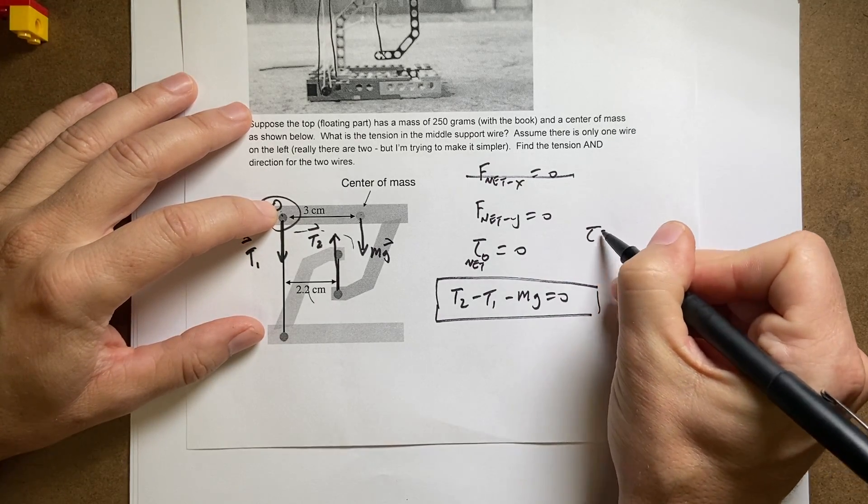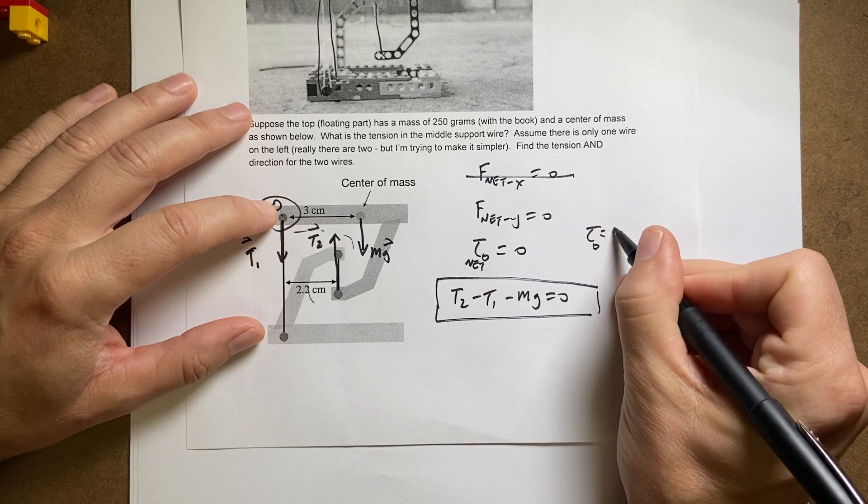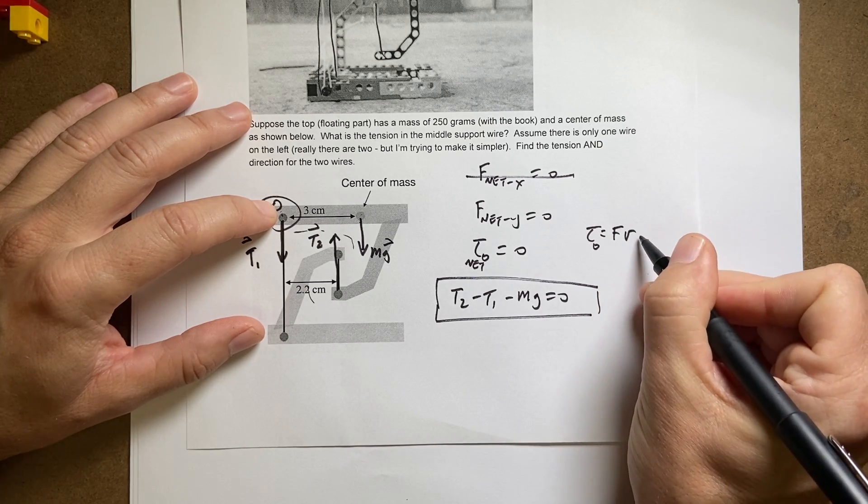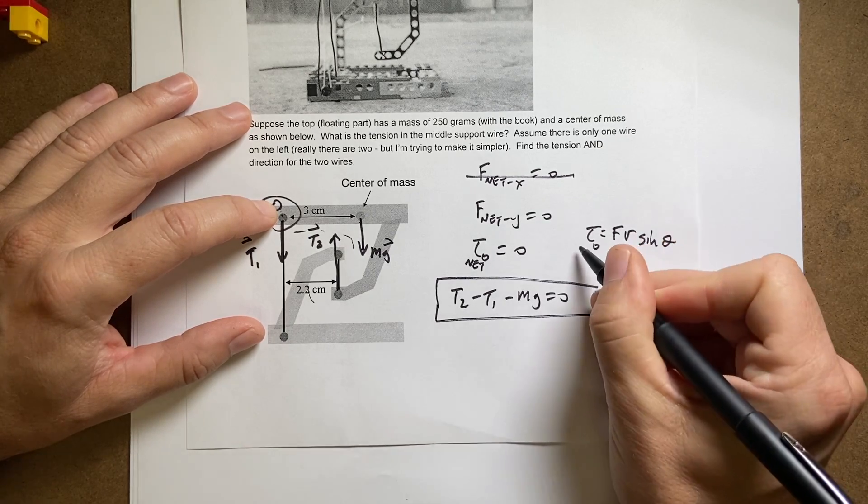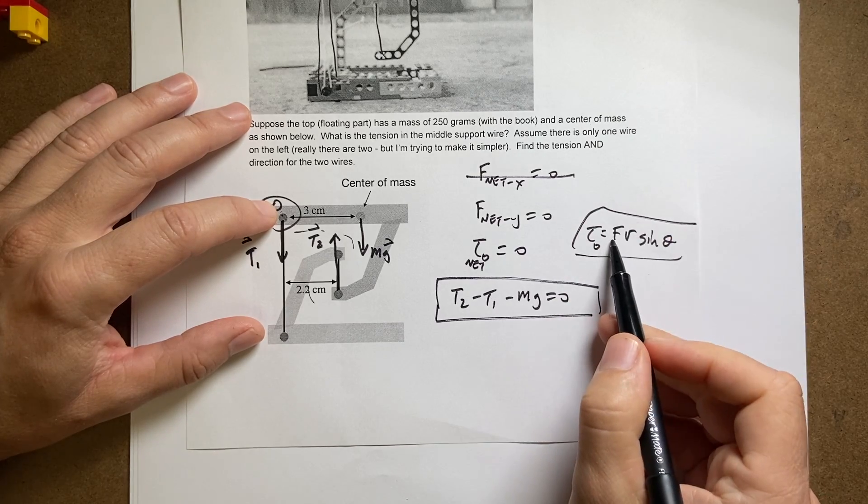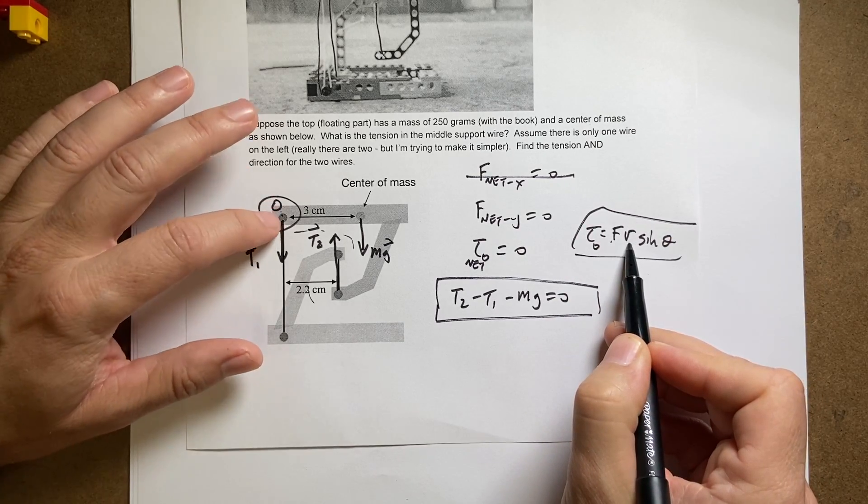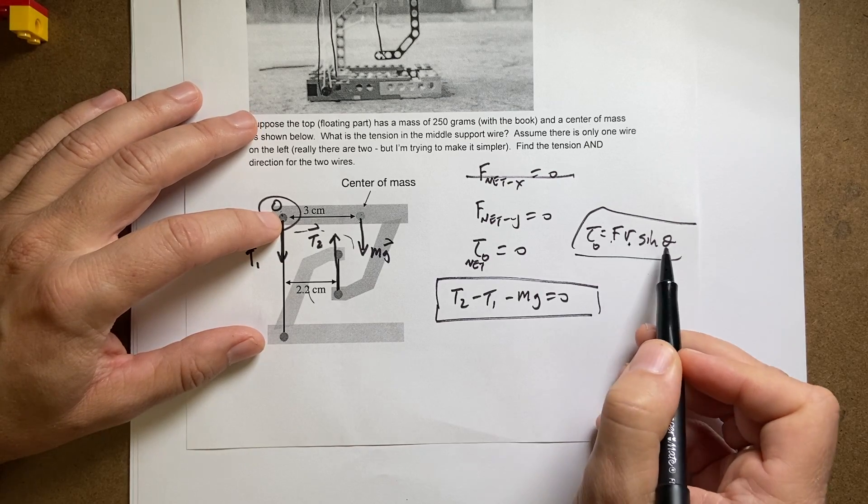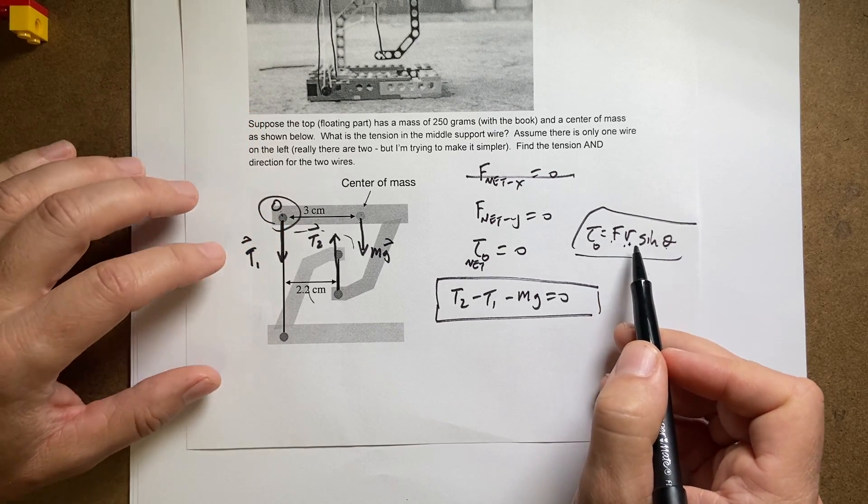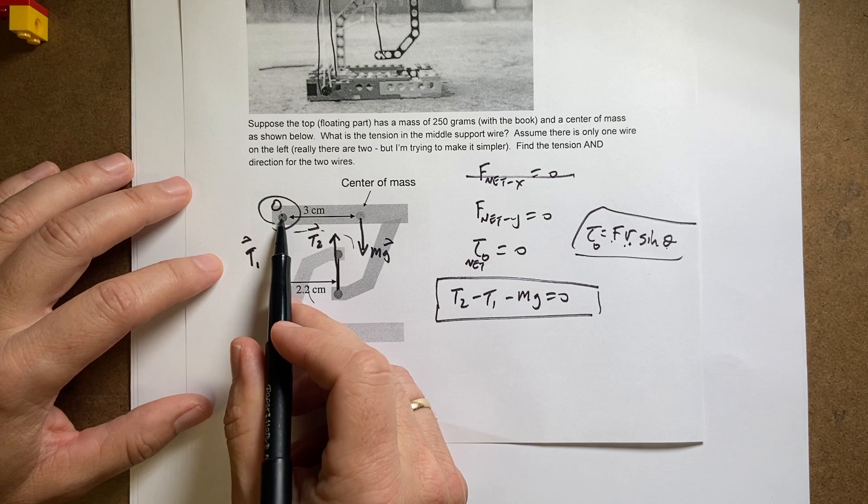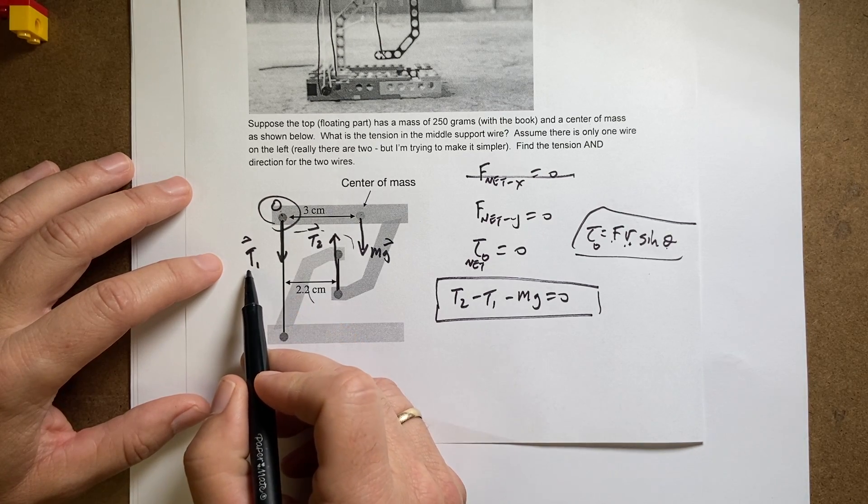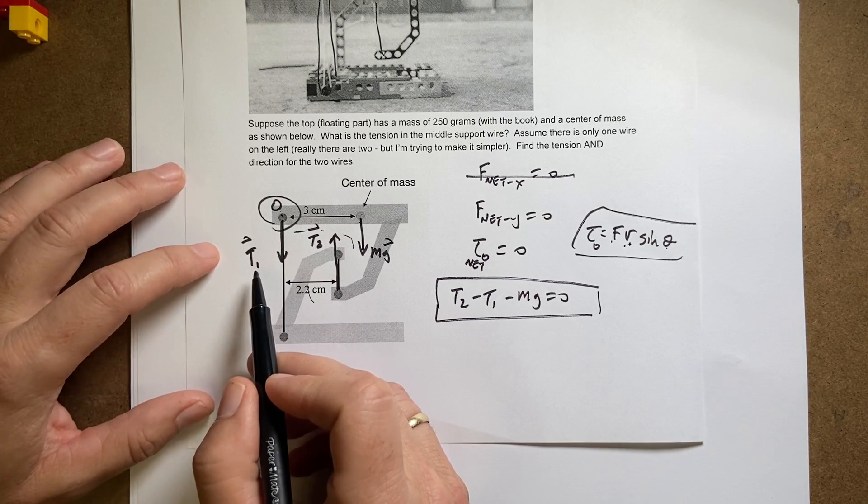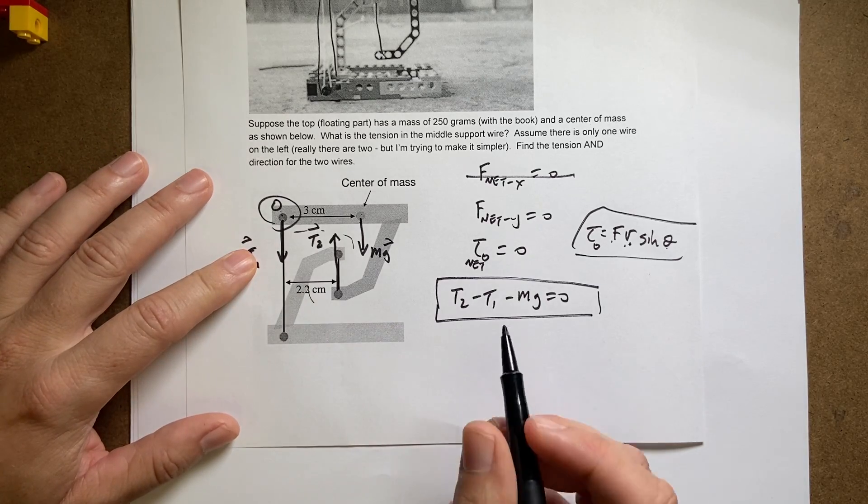If I pick this, remember that torque about some point O is F R sine of theta. So F is the force, R is the distance from the point to where the force is applied, and theta is the angle between R and F. So in this case, if I'm pushing at the point of rotation, T1 exerts no torque. So that's not even going to be in my torque equation.